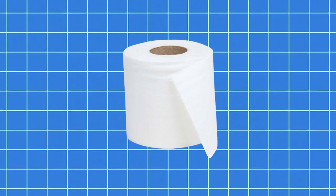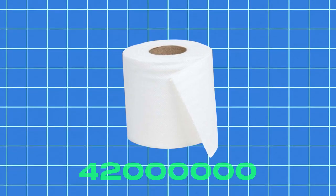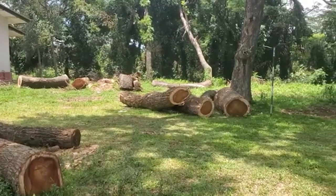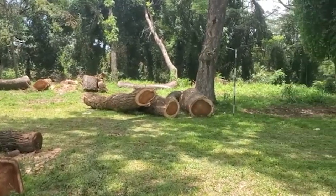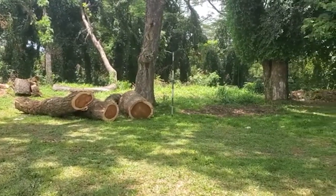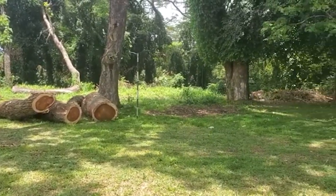Did you know that the world uses a whopping 42 million tons of toilet paper every year? That's equivalent to cutting down over 270,000 trees daily for this one essential household item.